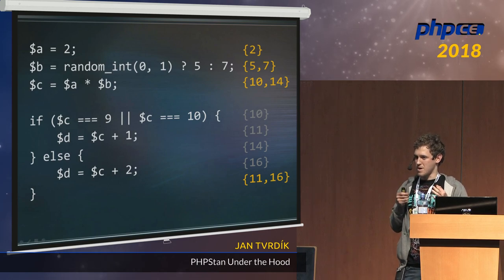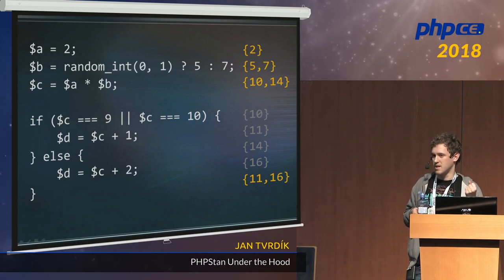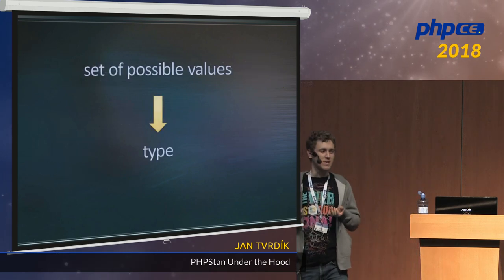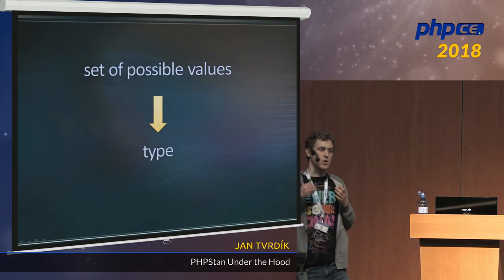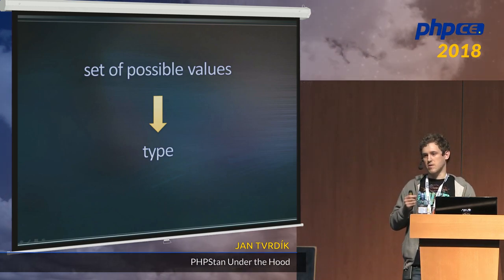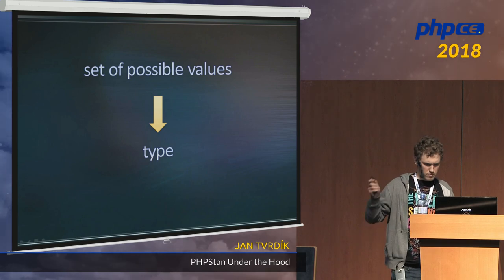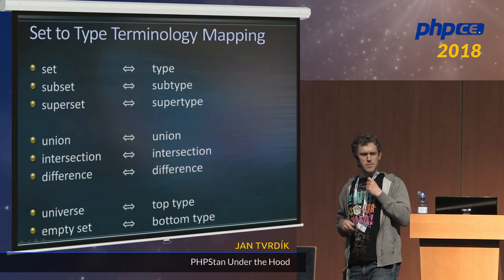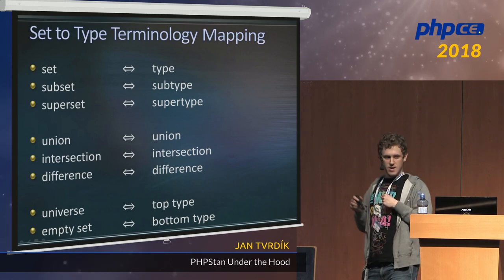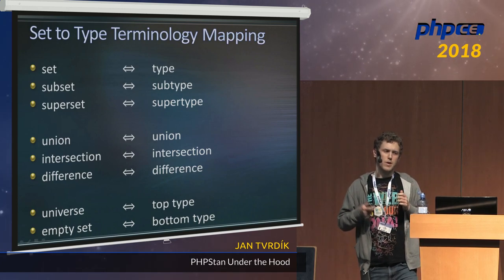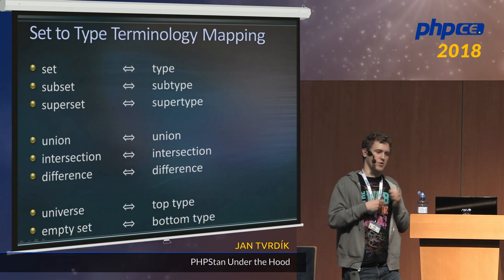Have you noticed how impractical it is to use the term 'set of possible values'? It would be much better if there was a shorter term — ideally just one syllable. It turns out there is such a term: instead of 'set of possible values,' we use the word 'type.' When you think about type, it's important to understand that it really means an abstraction over a set of possible values. So instead of 'set' we use 'type,' instead of 'subset' we use 'subtype,' instead of 'superset' we use 'supertype.' The operations — union, intersection, difference, complement — keep the same names.